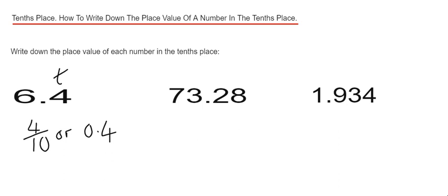Let's have a look at example two. This time we have 73.28. Our tenths place is the first digit after the decimal point, so that is 2. We have 2 tenths here. We can write that as a fraction like that, and 2 tenths can also be written as 0.2 as a decimal.